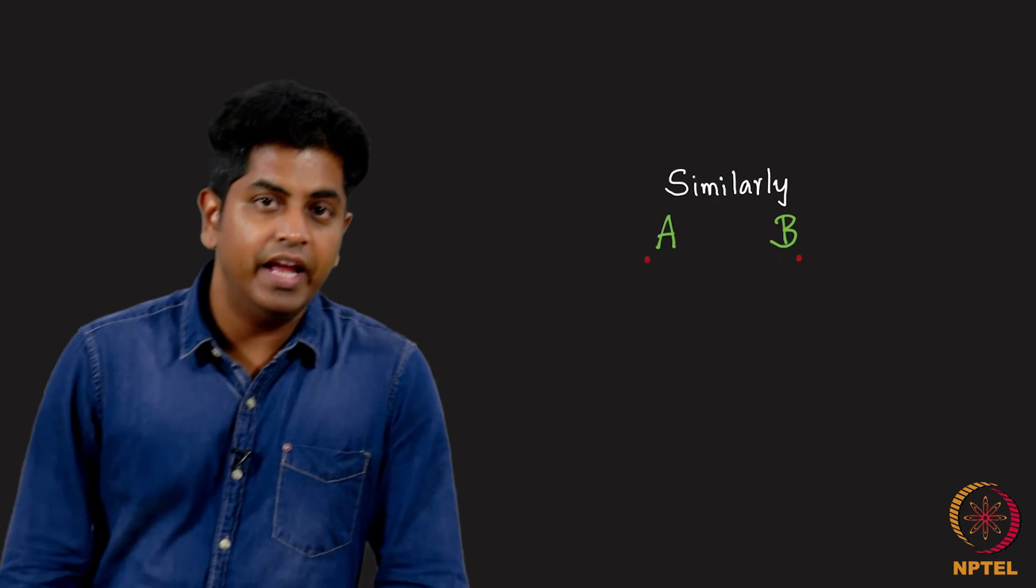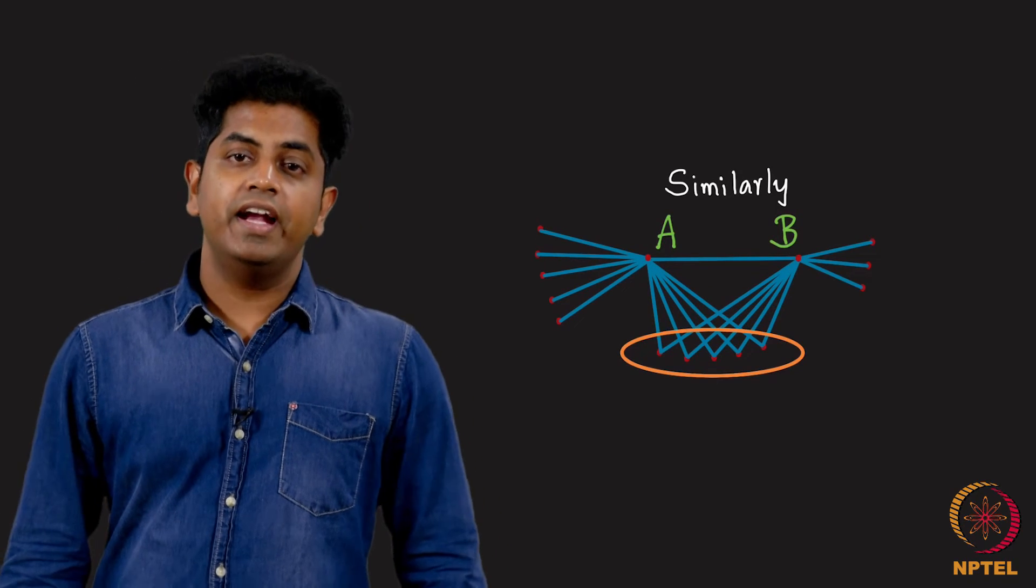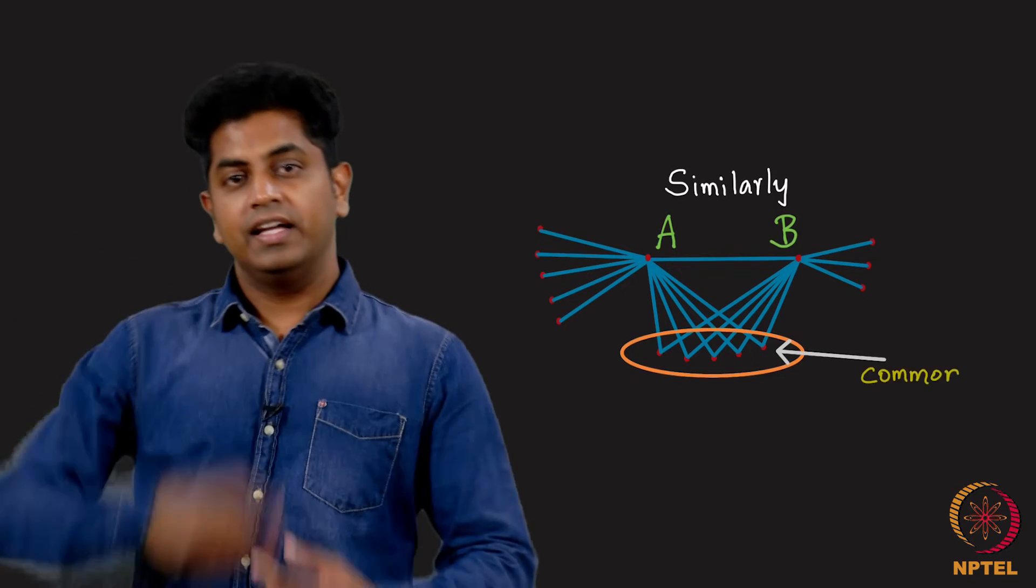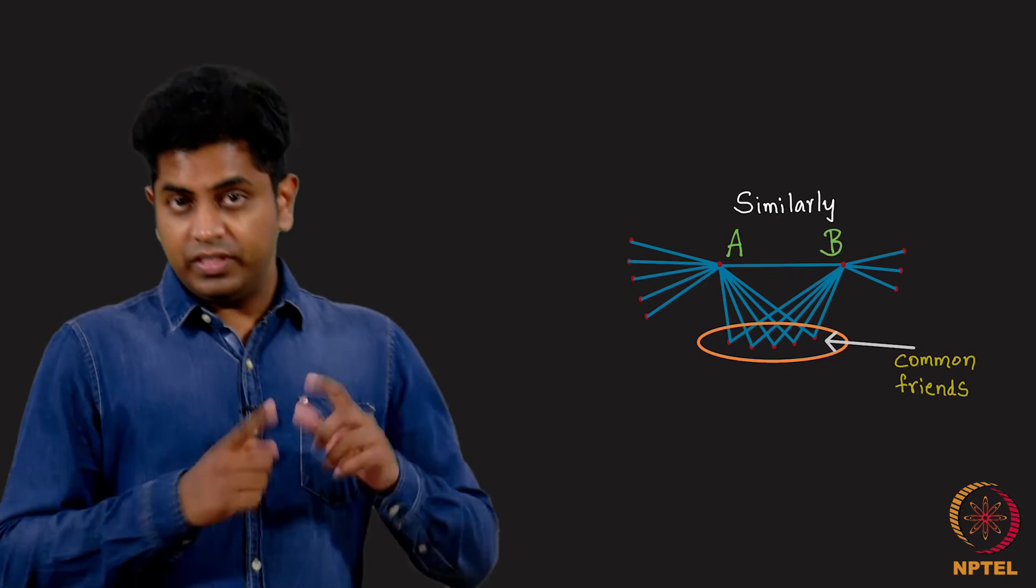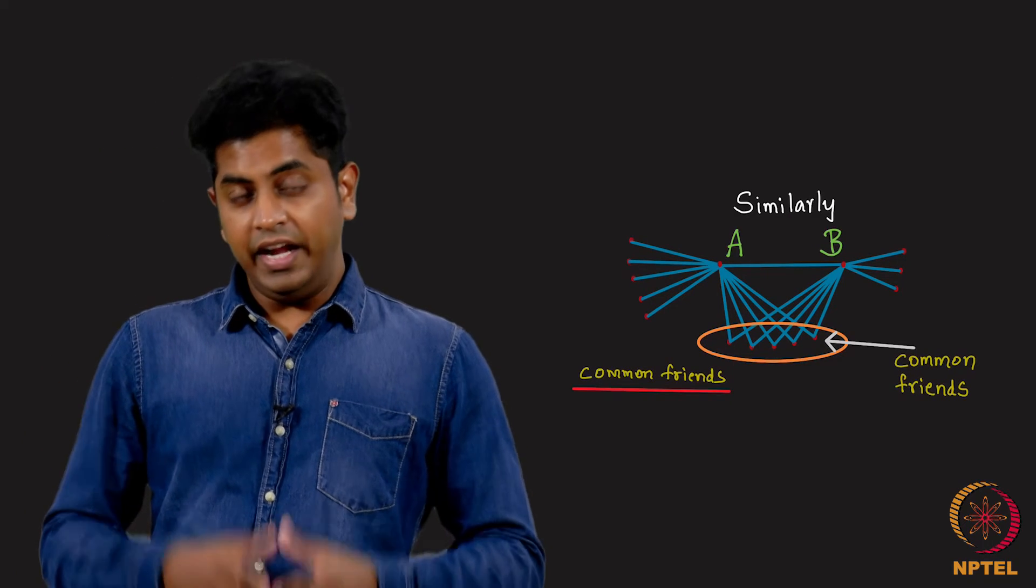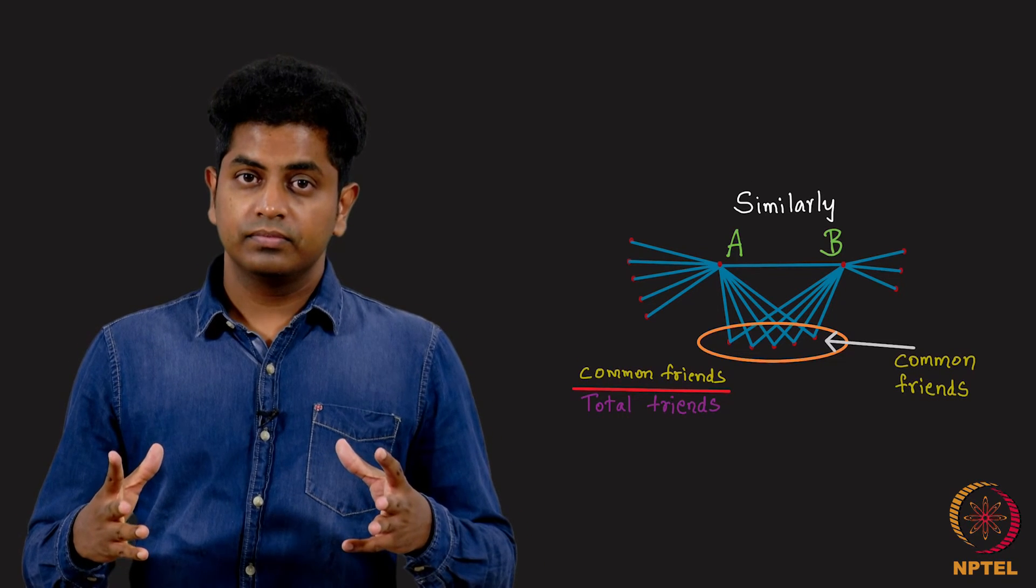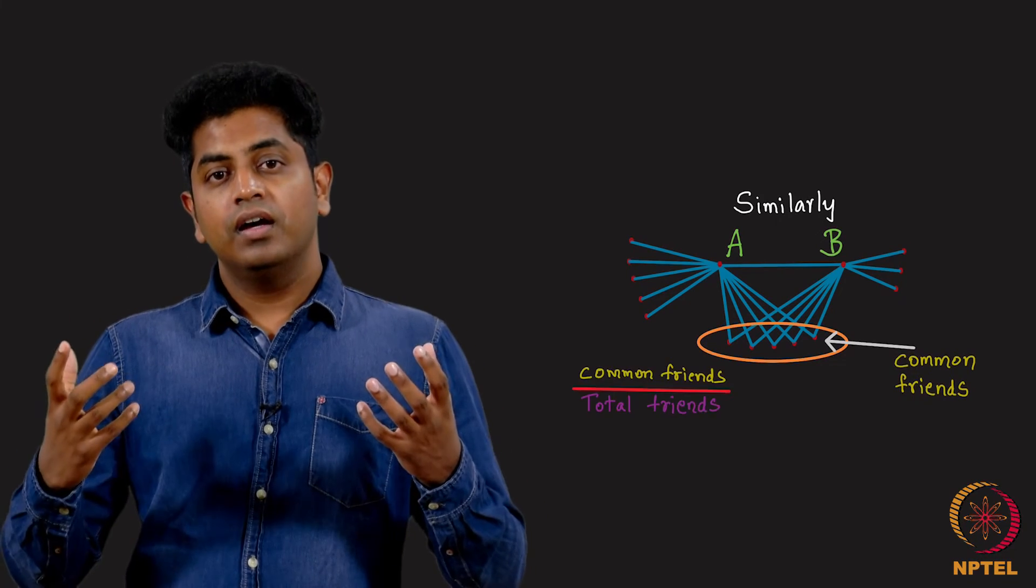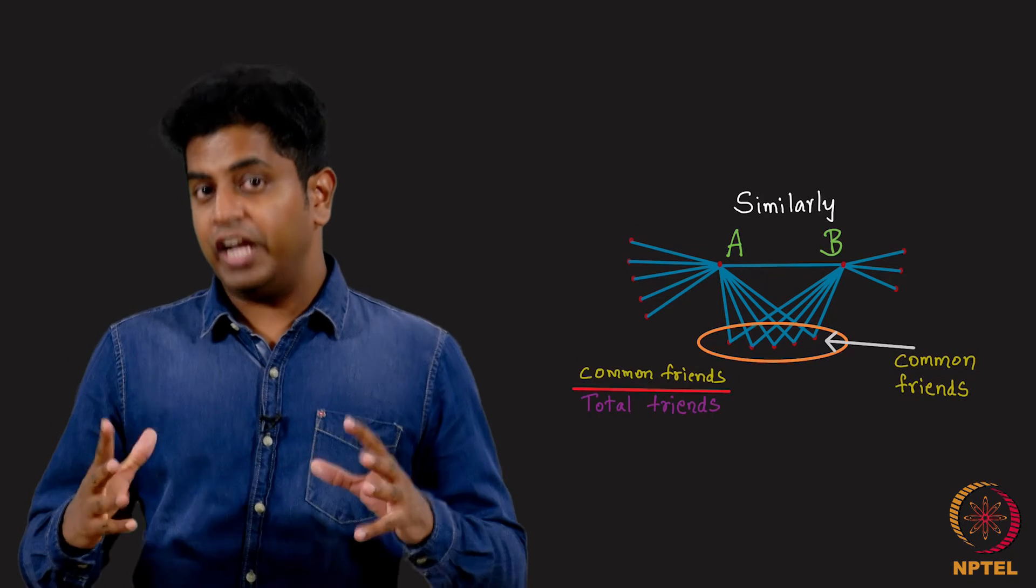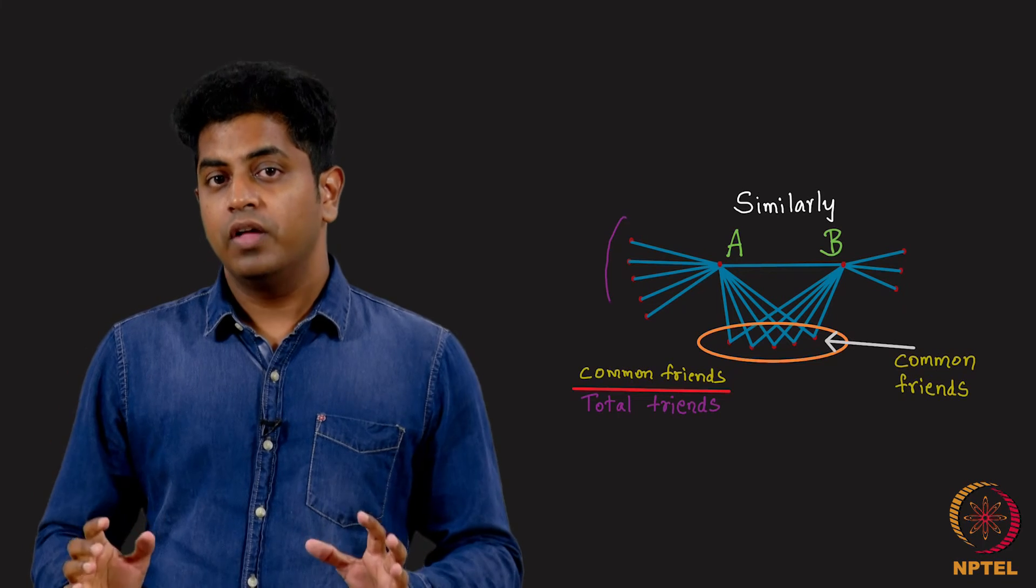Similarly, the strength of a friendship between A and B can be defined the following way. You can simply see how many common friends do A and B have and designate that as the strength of their friendship. Or you can put this in the numerator, and in the denominator you can put the sum total of friendships of A and B. I repeat - you look at what fraction of the friends of A and B are common friends. So this is called the neighborhood overlap.